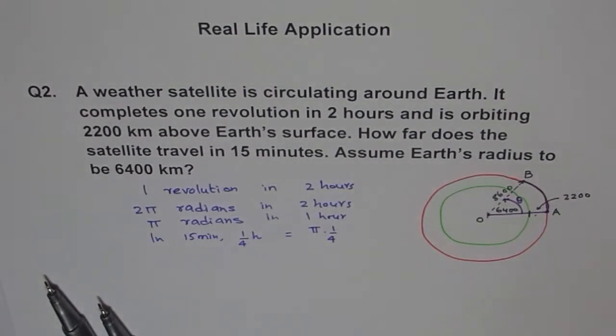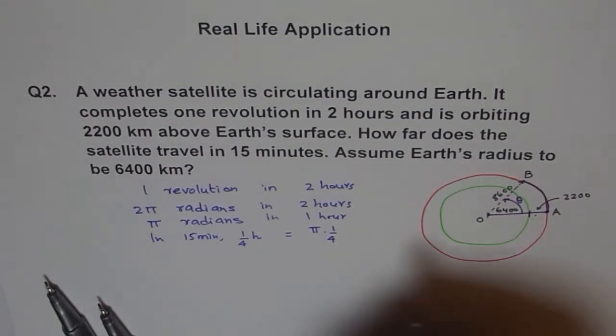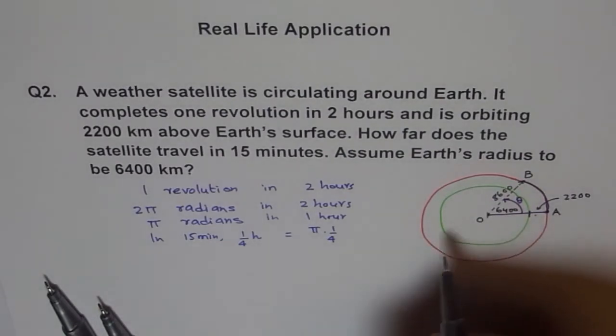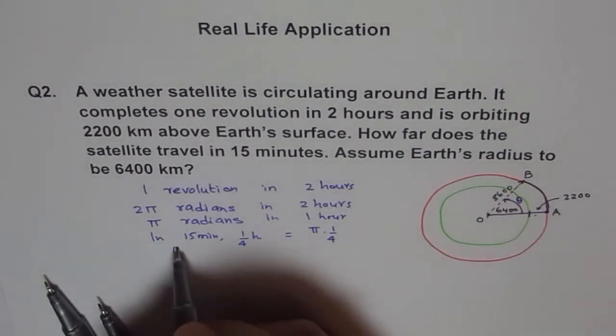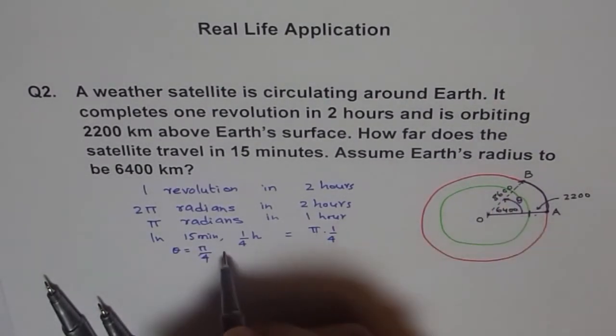Simple. So it is pi by four radians, correct? So we know this theta is pi by four, correct? Right? So theta equals pi by four. And we know R is 8600.